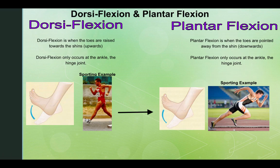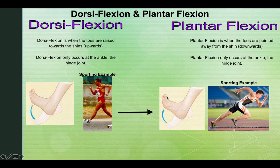Dorsiflexion and plantar flexion. Dorsiflexion is when the toes are raised up towards the shins. Dorsiflexion only occurs at the ankle, the hinge joint. As you can see, the toes point up and the foot is dorsiflexed. A sporting example would be speed walking or any type of running where the ankle moves upwards towards the sky. The opposite of this is plantar flexion. Plantar flexion is when the toes are pointed away from the shins, or downwards. Plantar flexion only occurs at the ankle, the hinge joint. Here you can see the toes point towards the ground as the foot plantar flexes.